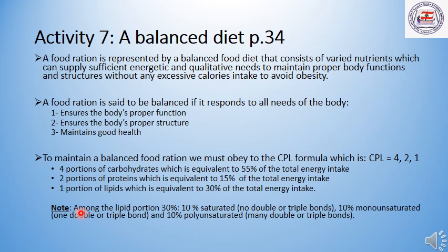Keep in mind that within the lipid portion of 30 percent, 10 percent is supposed to be covered by saturated lipids, which have no double or triple bonds; 10 percent by monounsaturated lipids, which can have either one double bond or one triple bond; and the last 10 percent by polyunsaturated lipids, which means lipids that can have many double or triple bonds.